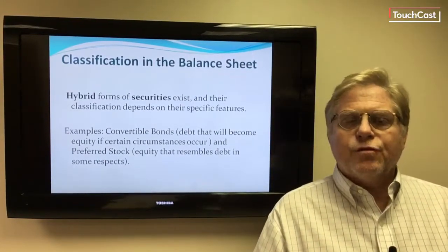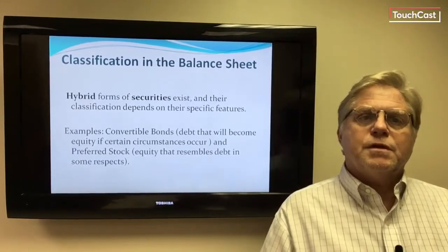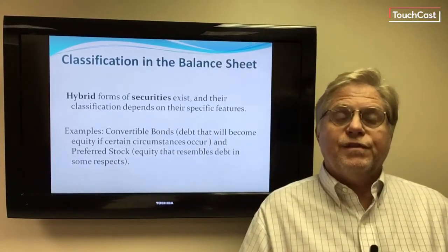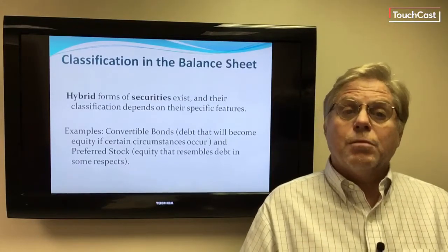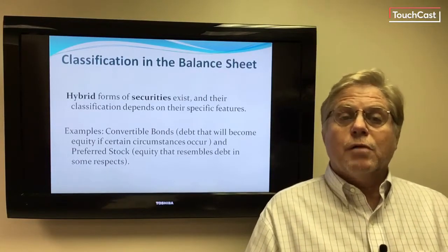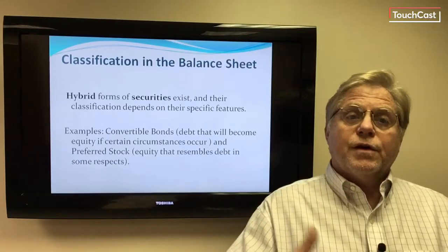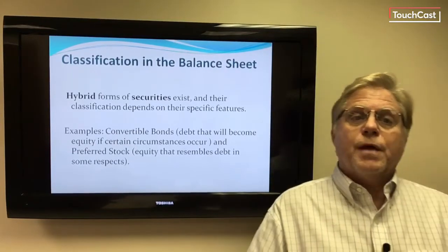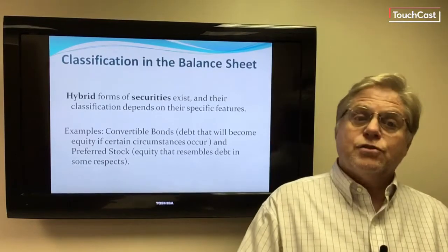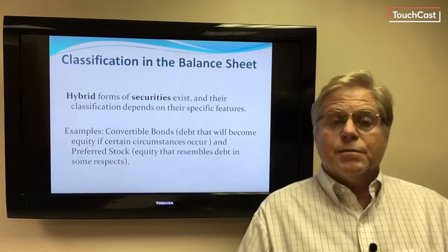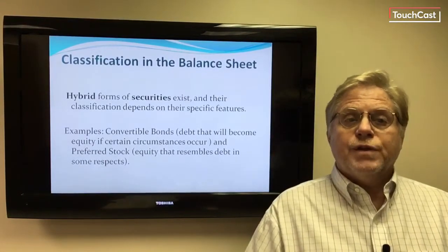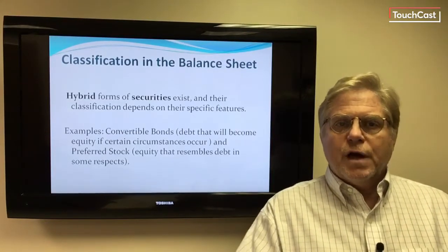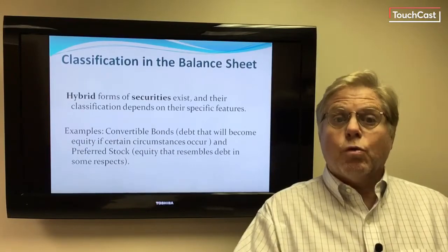There are also some hybrid forms of securities that sometimes arise, and their classification depends on their specific features. For example, convertible bonds — debt that will become equity if certain circumstances come about — and preferred stock, which is equity that has some features of debt as well as equity. These hybrid securities must be identified either as debt or as equity.